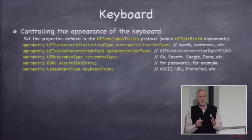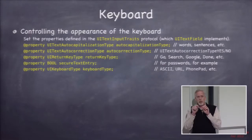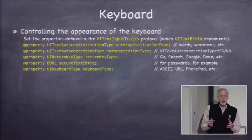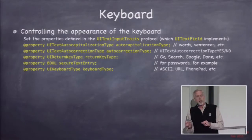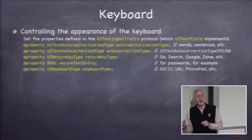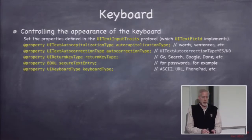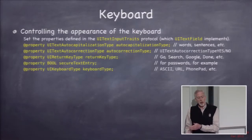If your text field is a password, secure text entry will make the characters appear as dots. The return key on the keyboard can display words like 'search' or 'go', and you control that with the return key type. These are all properties you set on your UITextField but you're really controlling the keyboard.